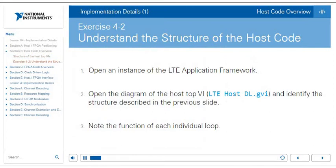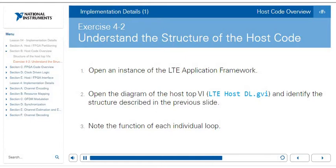In this next exercise, go ahead and understand the structure of the host code. Open an instance of the LTE application framework from the lobby under projects, scrolling down to application frameworks, and choosing the version for your hardware (FlexRIO or USRP RIO). Open the diagram of the host top VI 'LTE host downlink.gvi' and identify the structures described. Note the function of each individual loop — this will help you know which loop to navigate to when you need to find specific functionality.